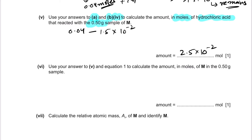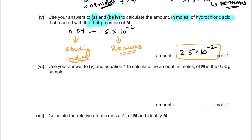The starting moles of HCl was 0.04 mol, and since HCl is in excess, some remains at the end. What remains is 1.5×10⁻² mol. So the moles of HCl that actually reacted with the Group 2 metal M = 2.5×10⁻² mol.